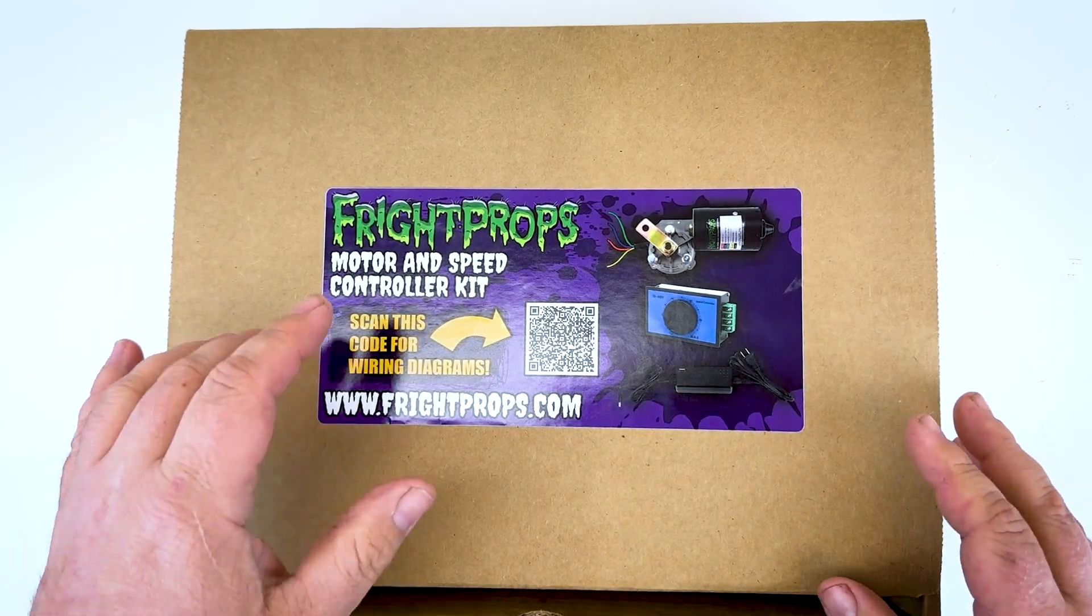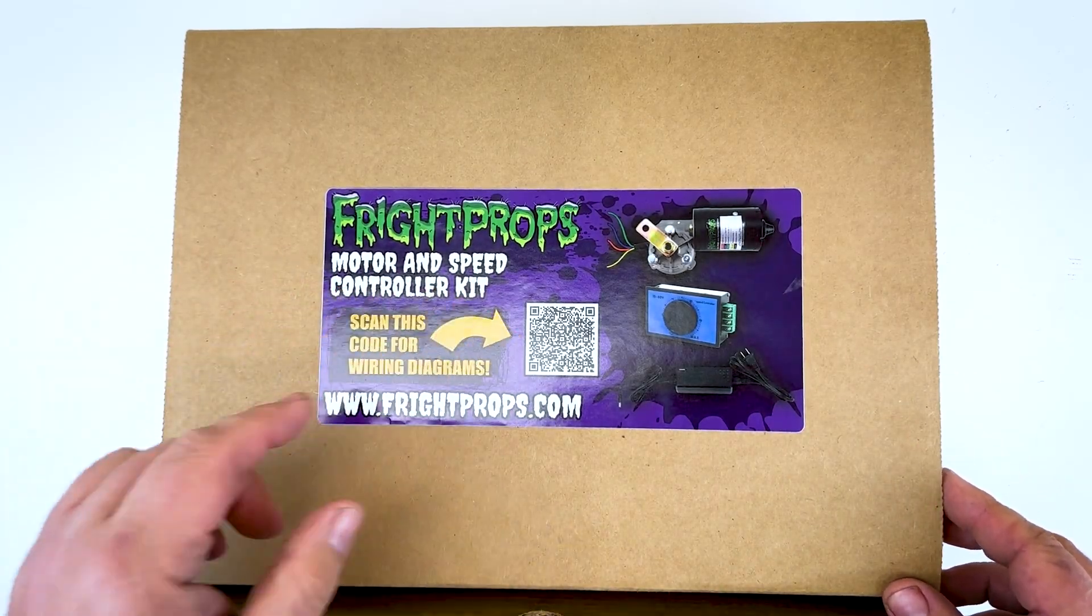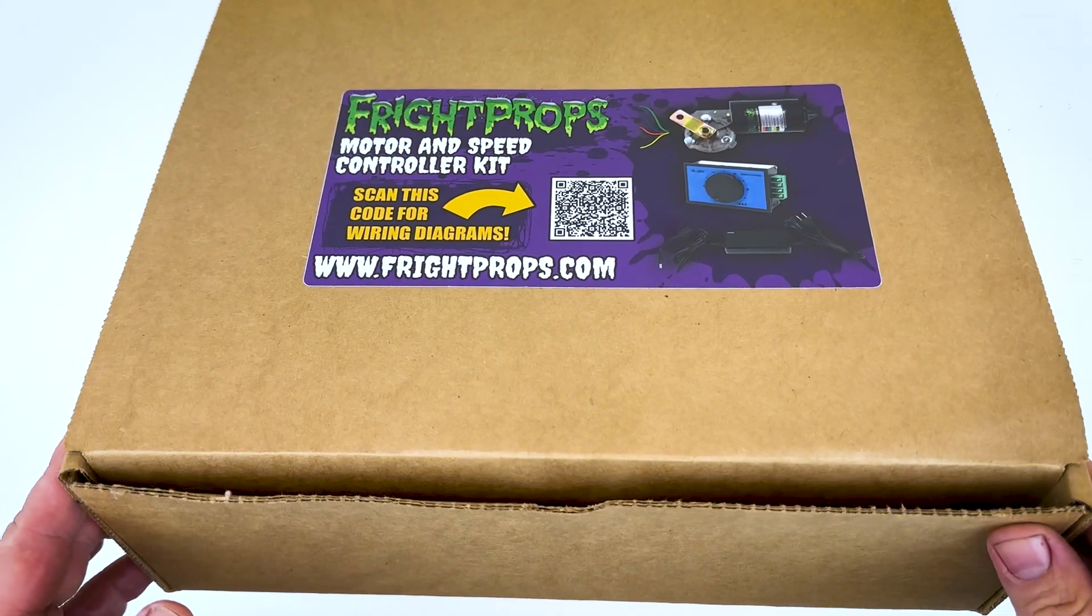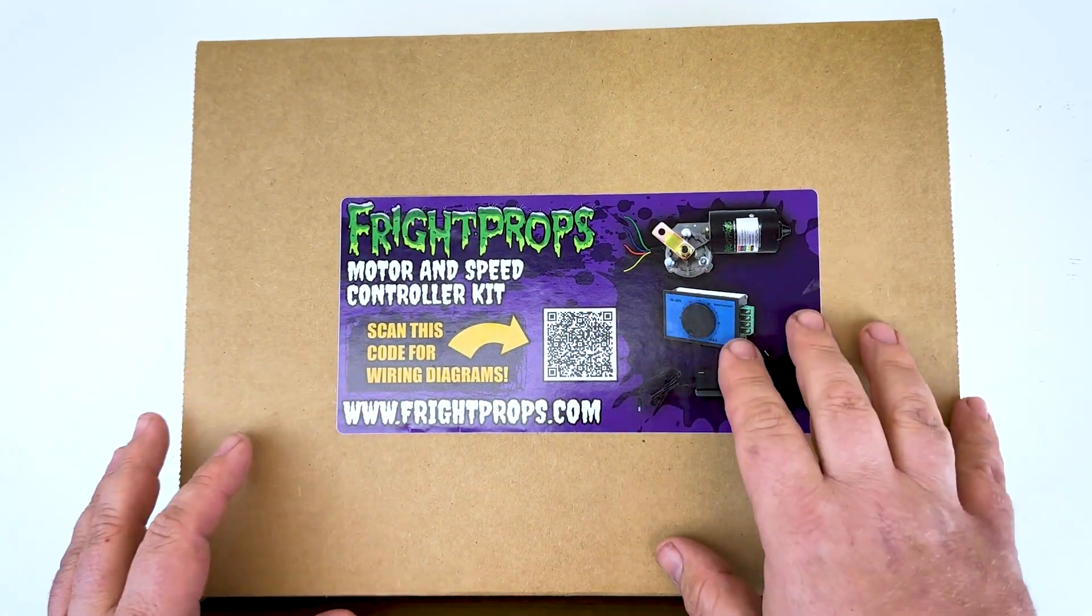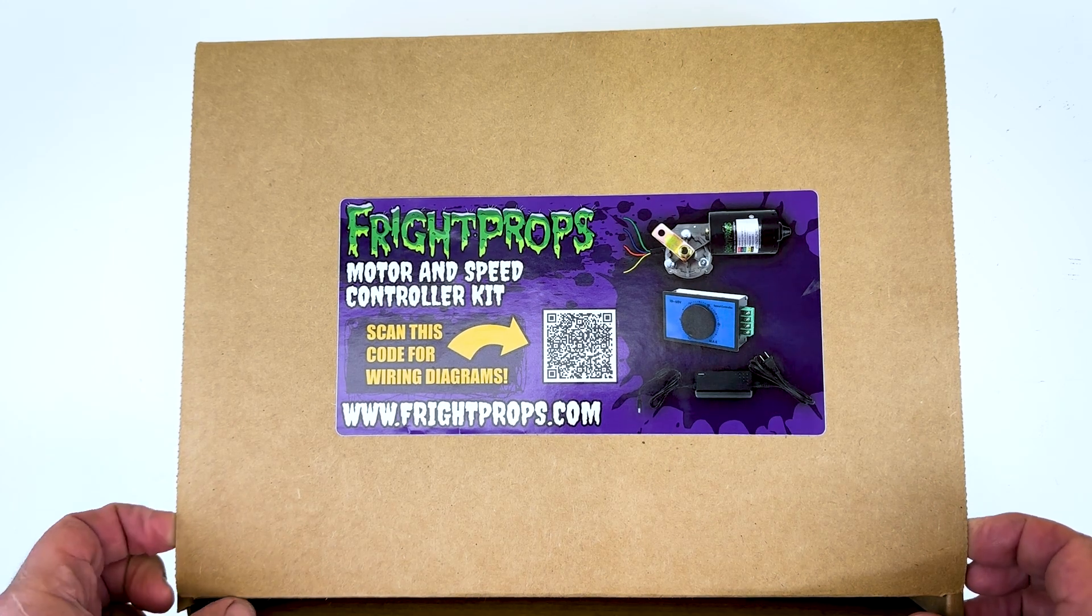Hey Fright fans, Scott from Fright Props here. Today we're going to be unboxing our motor and speed controller kit. The kit comes in a box like this with a label on the front and there's a QR code here that you can scan to see a wiring diagram for this setup. Let's pop it open and see what's inside.